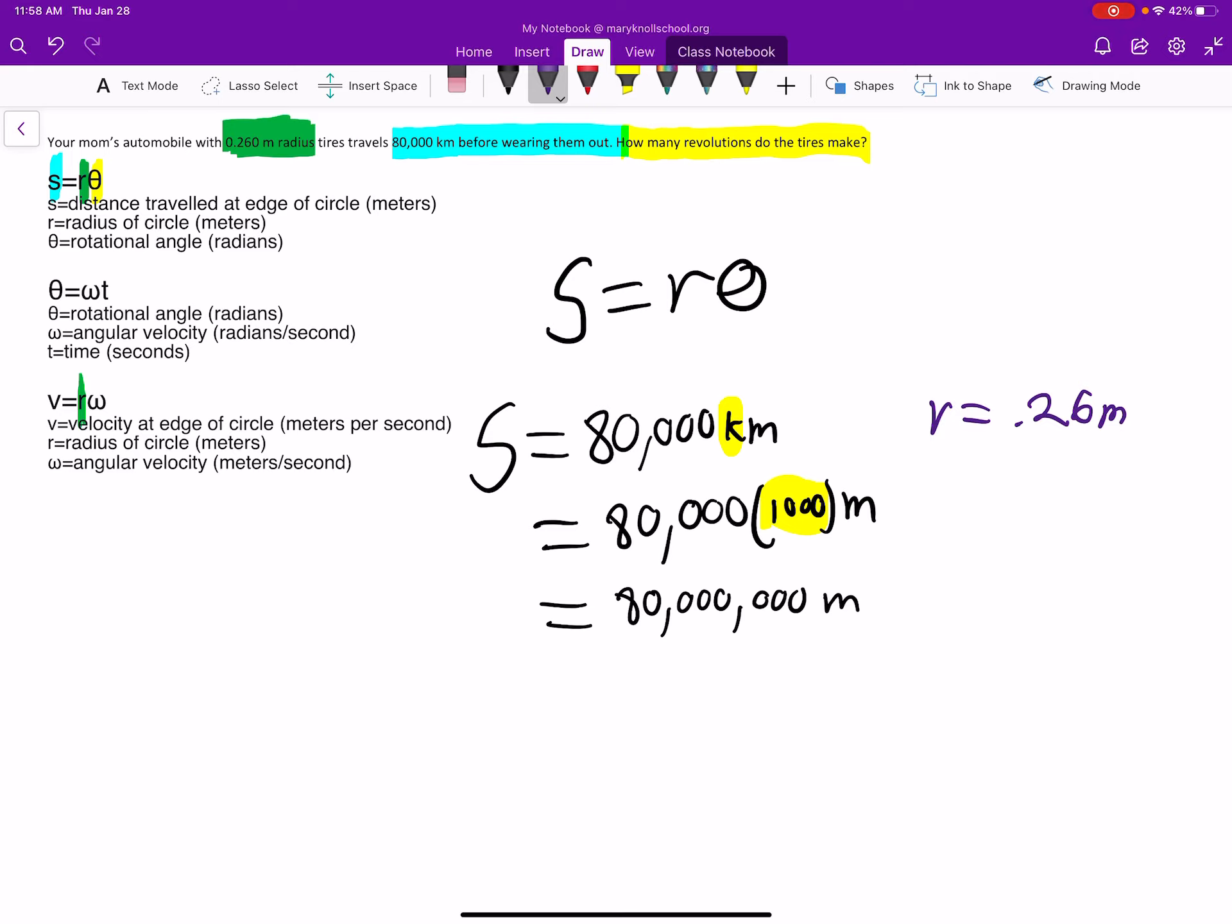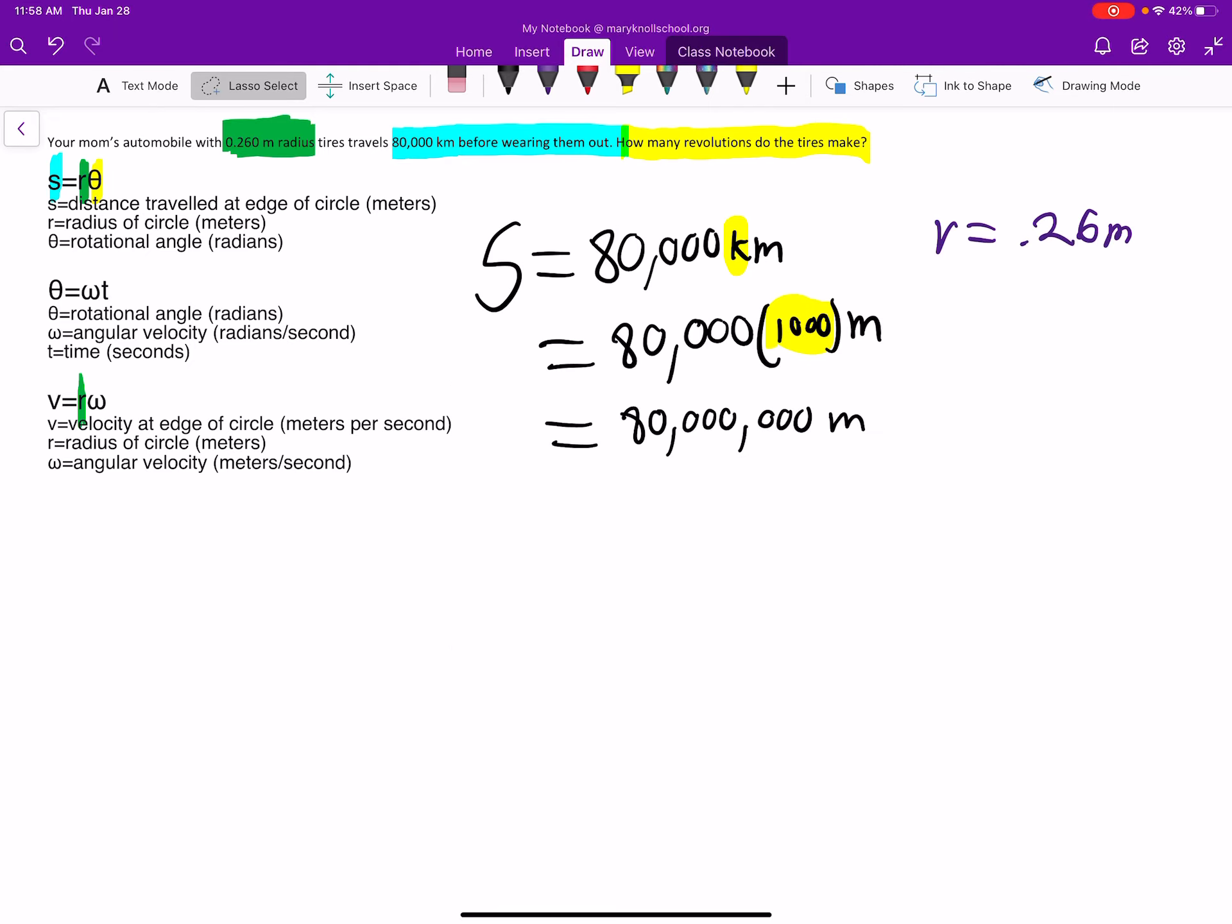So let's go ahead and use this S is R theta to solve. S equals R theta. S is 80 million. R is 0.26, and theta, that's what we're solving for. So let's go ahead and divide both sides by 0.26. And then we know theta is going to be - I'm just using the calculator, I'm just going to use the first three significant digits. So we get 307, and those are all - oh, 308 actually to round up.